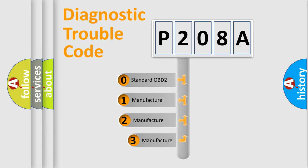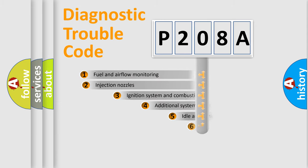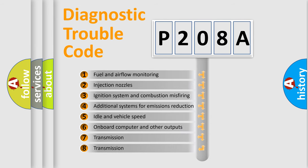If the second character is expressed as zero, it is a standardized error. In the case of numbers 1, 2, 3, it is a manufacturer-specific error. The third character specifies a subset of errors.